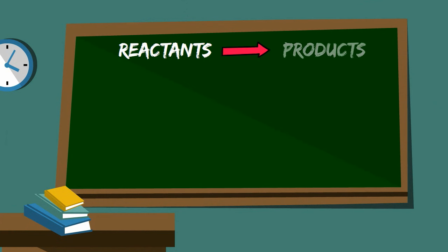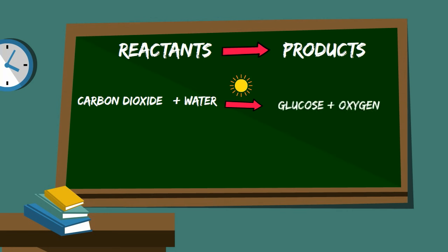And then you have the products. On the left you have carbon dioxide plus water, then over the arrow you have light, then you have glucose as a product plus oxygen.